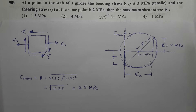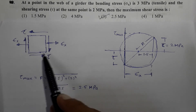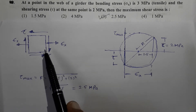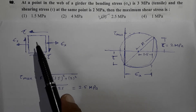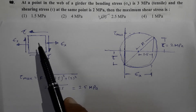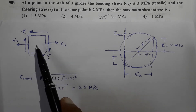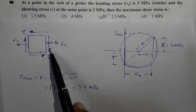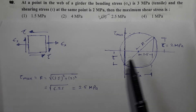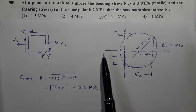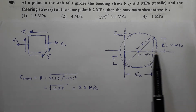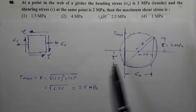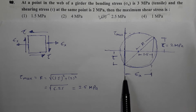If I draw this stress element, it is going to be like this. Sigma x is given, which is 3 MPa. Sigma y is not given, which simply means that it is 0, and shear stress is 2 MPa. In Mohr circle, direct stress is to be plotted along the x-axis, whereas the shear stress is to be plotted along the y-axis.